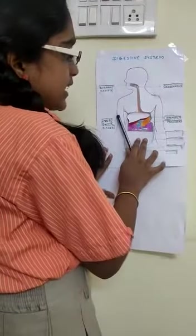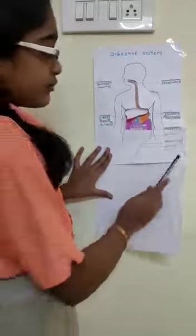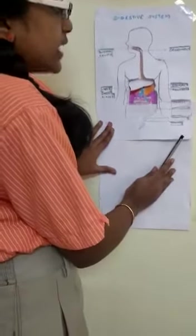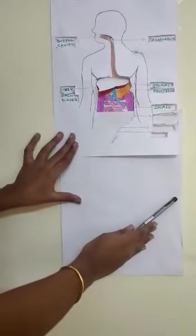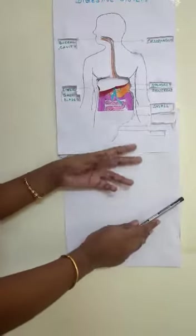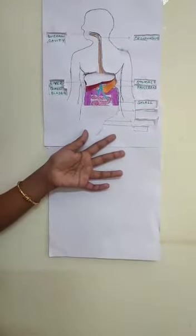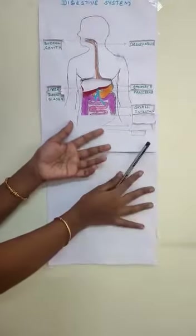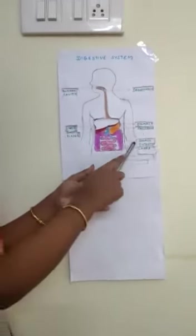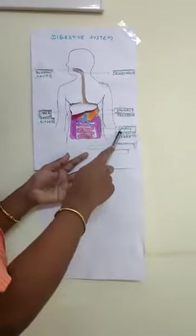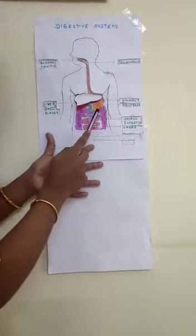This partly digested food enters the small intestine. The small intestine is highly coiled and it is about 7.5 meters long. The absorption of food takes place in the small intestine. The small intestine also receives digestive juices from the liver and pancreas.